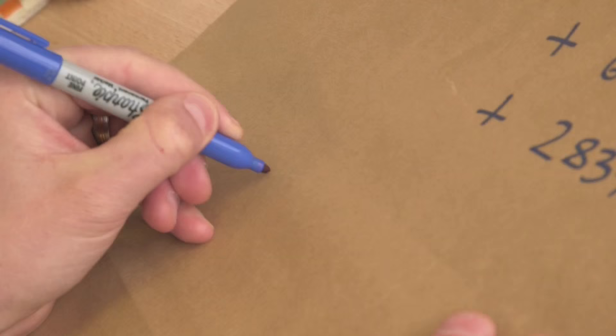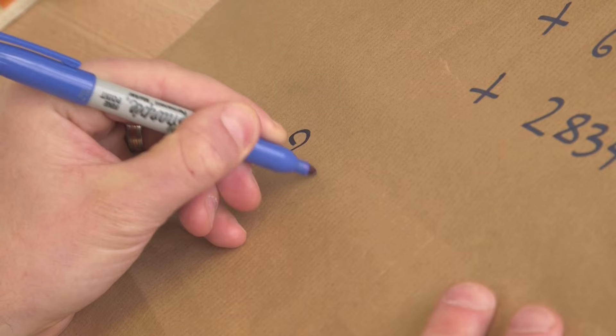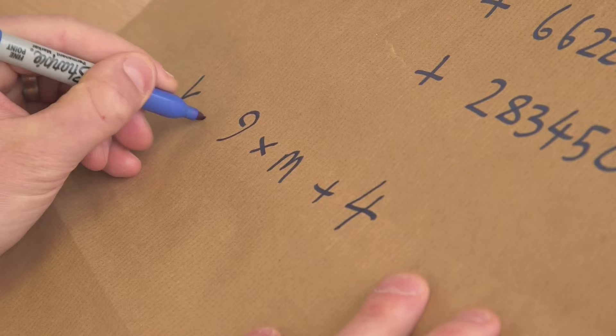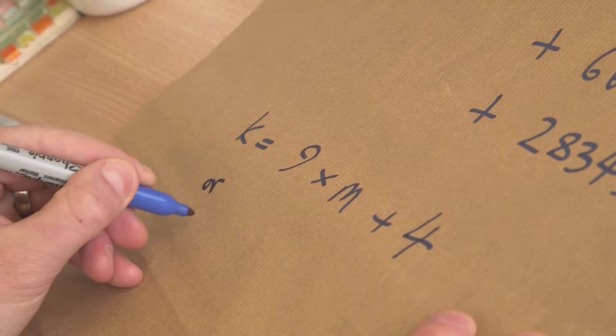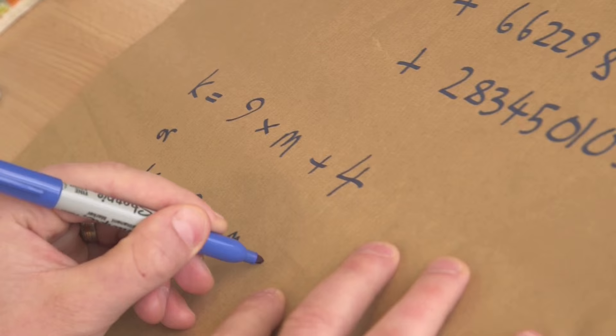Those were the numbers which could be written as either 9 times m plus 4 for some other integer m. For example, you could take m equal to 0, and we know that number 4 cannot be written as a sum of 3 cubes. Or the numbers which are of the shape 9 times another integer plus 5.